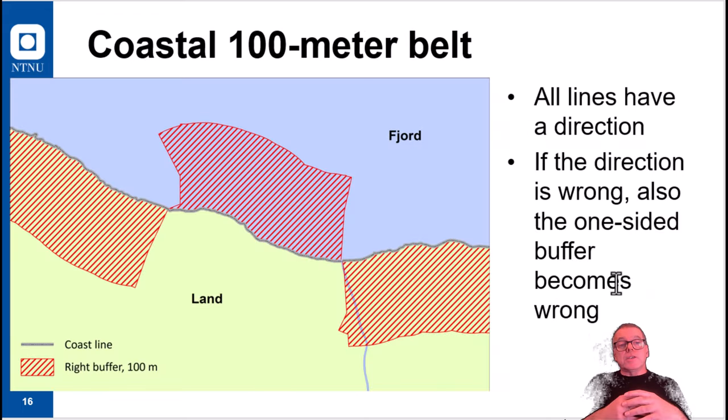So I tried this once because in Norway we have this regulation that you are not allowed to have development within the 100 meter belt from the coastline. So this should be open free spaces for everyone. So in order to generate this one-sided buffer representing a 100 meter belt, I had this error here.